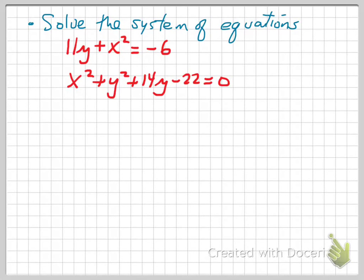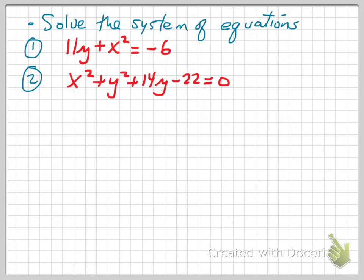In this case I would like to solve the system of equations given by 11y plus x squared is equal to negative six — equation one — and x squared plus y squared plus 14y minus 22 is equal to zero — equation two. I'm going to label these equations: this is equation number one and this is equation number two.